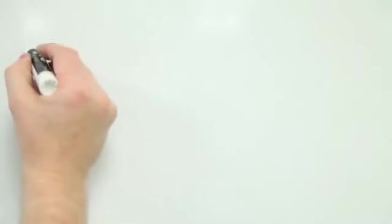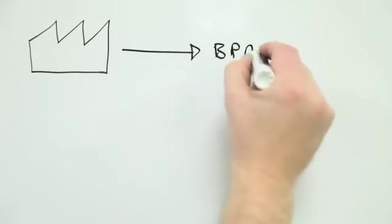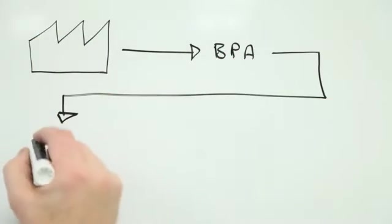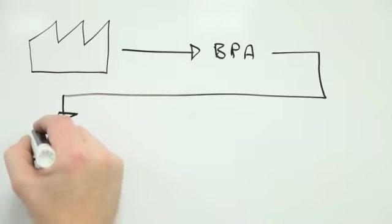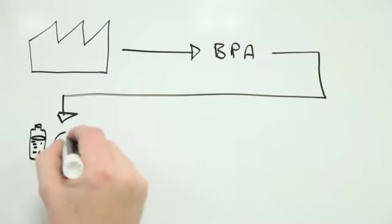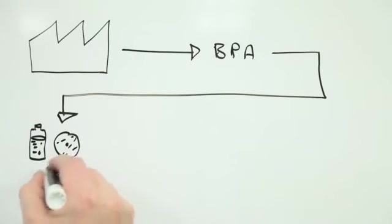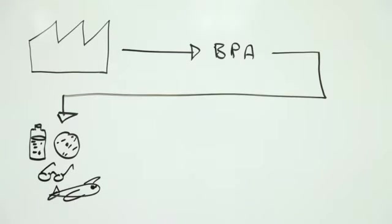Bisphenol A is a man-made organic chemical that was first synthesized in 1891. It's a primary component of polycarbonate plastic, that tough, transparent plastic that's used to make everything from water bottles to airplane parts, and DVDs to eyeglass lenses.